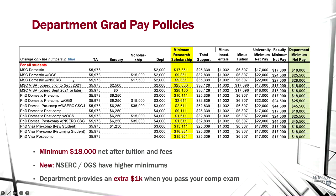If you're receiving a scholarship like OGS or NSERC, the minimum goes up — as high as $25,000 or $28,000. For domestic PhD students who receive NSERC CGS scholarship, the minimum can be as high as $45,000. This is why I highly encourage eligible domestic students to take the time to do well on scholarship applications, as it could make a big difference to your living conditions. For PhD students, after you pass your comprehensive exam, you will get an additional $1,000 from the department as a reward.